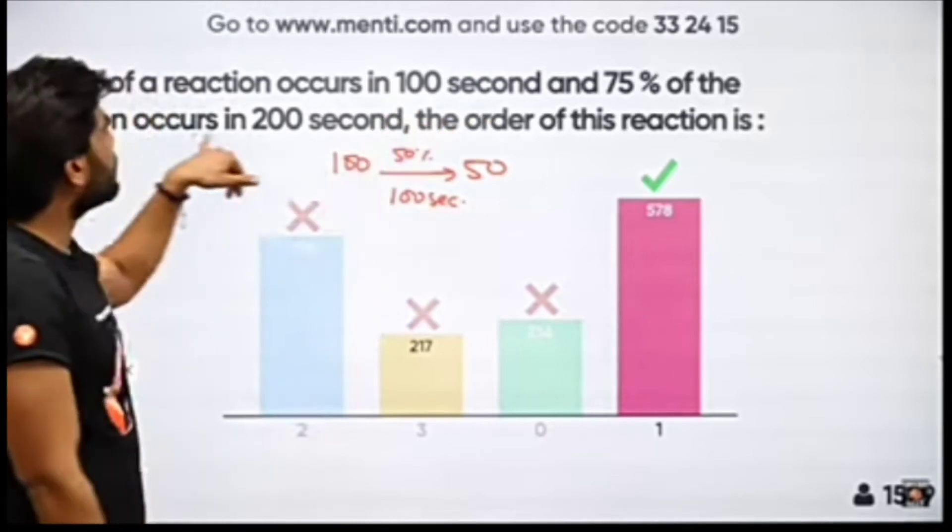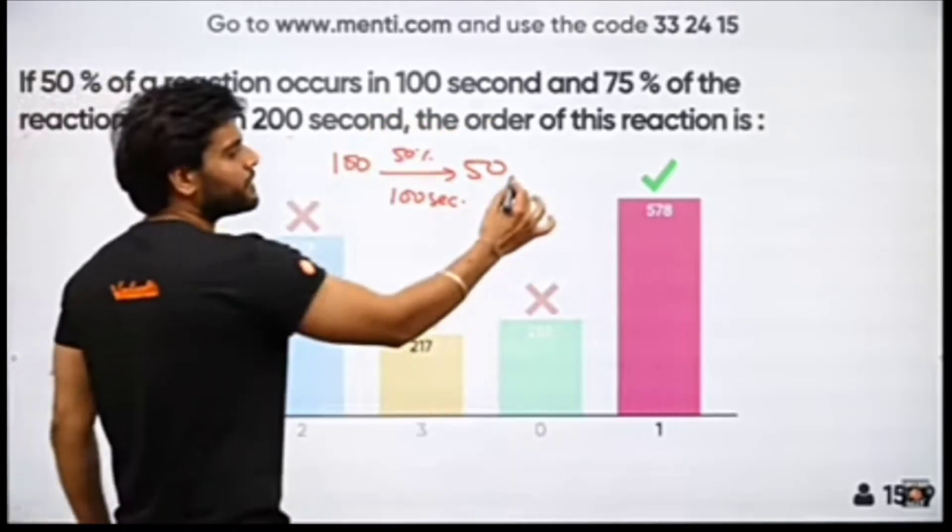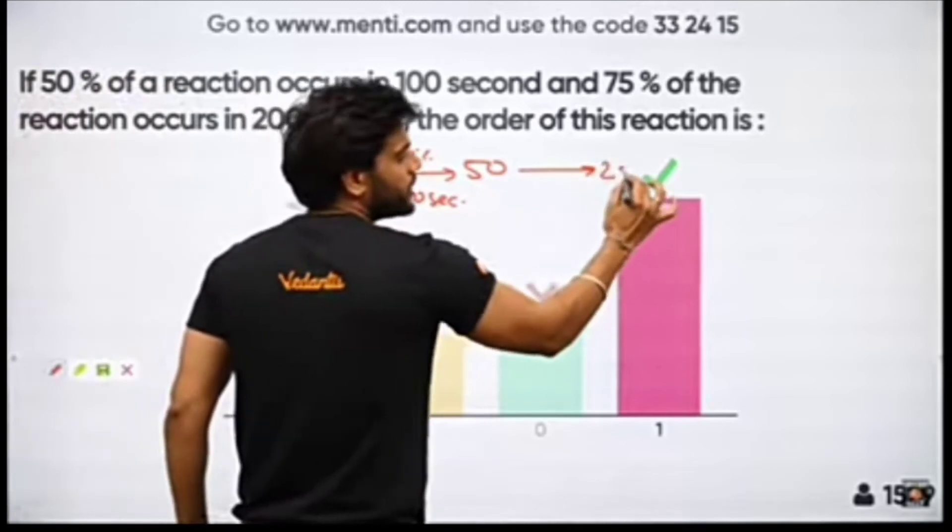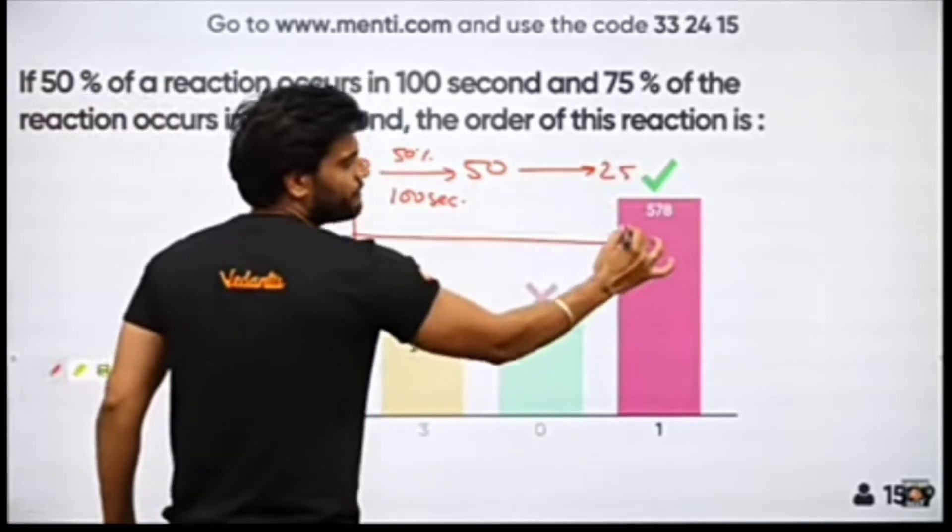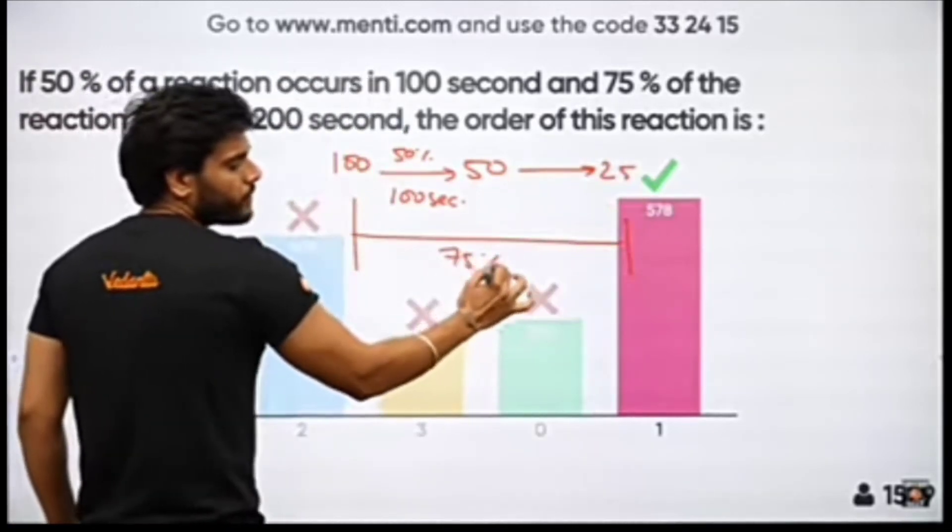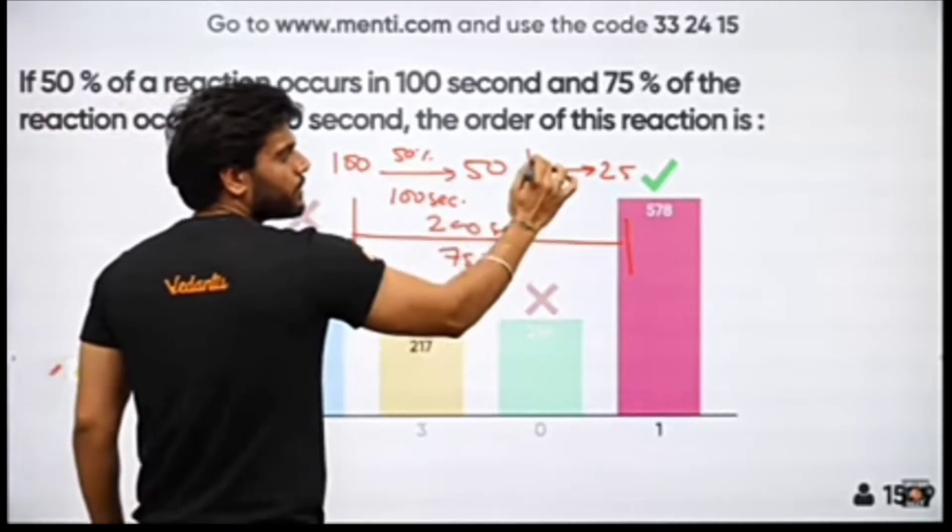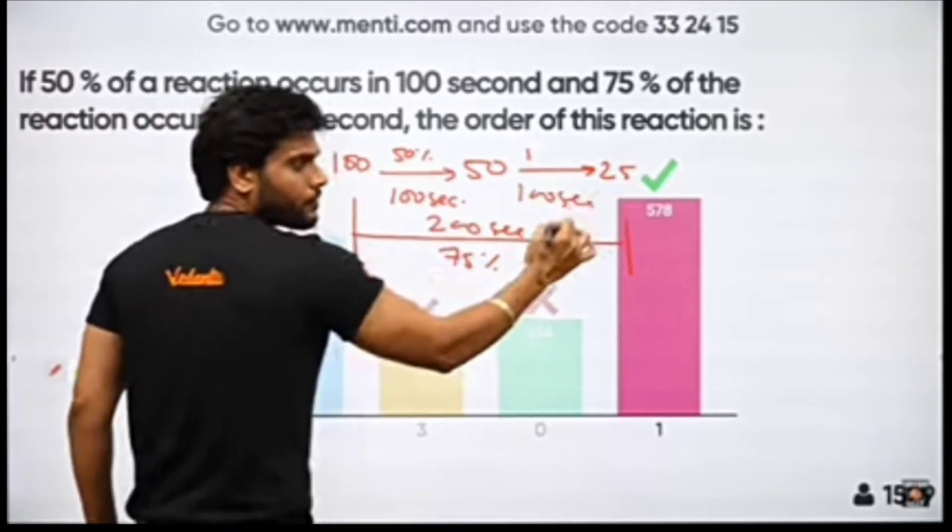Now it says 75% of the reaction occurs in 200 seconds. What does 75% mean? That means it went to 25. So here it's 75%. This is in 200 seconds. So how much is it? This is in 100 seconds.